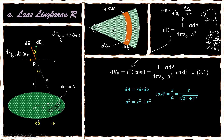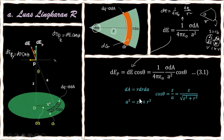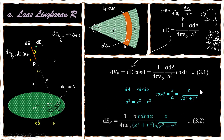Untuk A: A² = z² + R². Untuk cos θ: cos θ = z/A = z / √(z² + R²). Setelah kita mengetahui dA, A², dan cos θ yang semuanya sudah mengandung R dan dR, maka kita substitusikan ke persamaan 3.1, sehingga kita dapatkan persamaan baru.